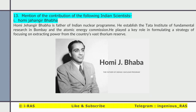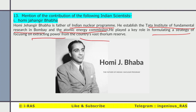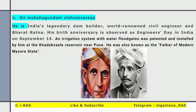Question 13 asks about the contribution of the following Indian scientists. First, Homi Jahangir Bhabha — father of the Indian nuclear program. He established the Tata Institute of Fundamental Research in Bombay and the Atomic Energy Commission. He played a key role in formulating the strategy of focusing on extracting power from the country's vast thorium reserves. Since uranium resources in India are limited, he gave the strategy to extract nuclear energy from thorium.